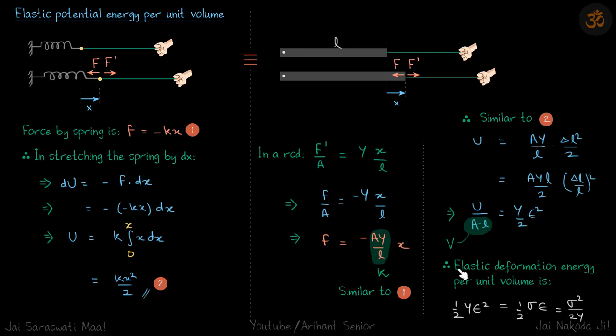Therefore, elastic deformation energy per unit volume for any material is half Y strain squared, is equal to half sigma into strain, because Y into strain is sigma. Or you can completely remove strain by writing strain is equal to stress by Y.